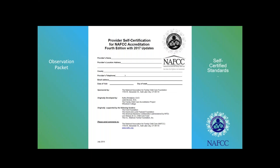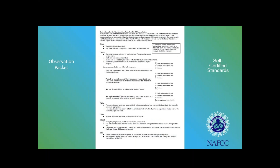The biggest piece of the packet is the provider self-certification packet. You can start working on it as soon as you receive it. Fill out the first page to verify your address, then read the instructions on the second page carefully. You'll go through the packet, read each standard, score yourself, and if there are lines next to a standard, you'll need to write how you meet it. Be sure to write a detailed description everywhere lines are provided to avoid delays in your scoring process.